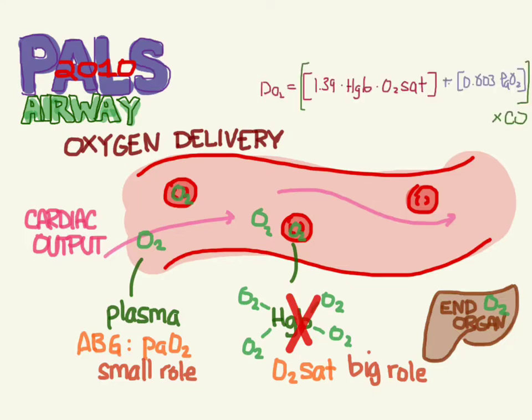If you want to see this mathematically depicted, hemoglobin times oxygen sat times 1.39 plus 0.003 times the PaO2. This plays a tiny role - look at this constant, you're multiplying by 0.003 versus 1.39. Add these two up to get oxygen content of the blood, multiply that times cardiac output, and that gets you oxygen delivery.